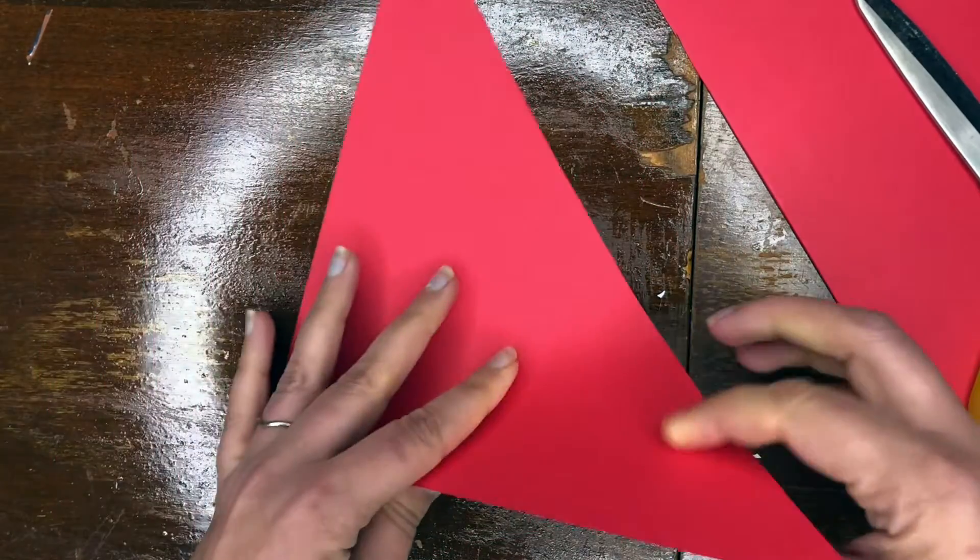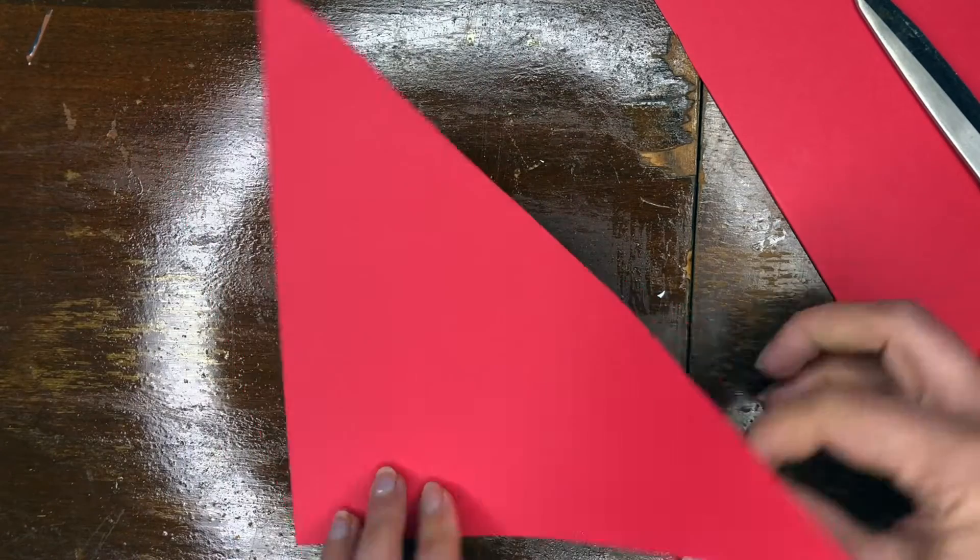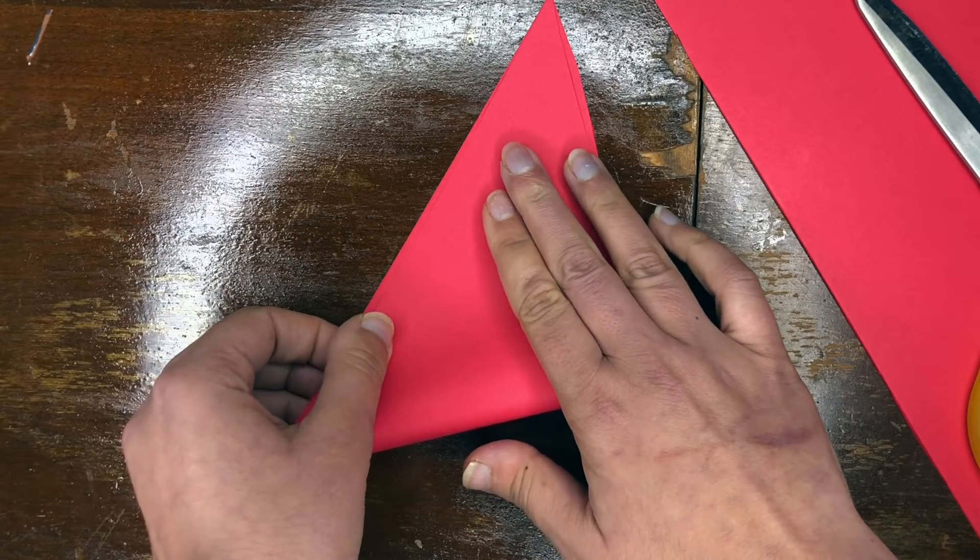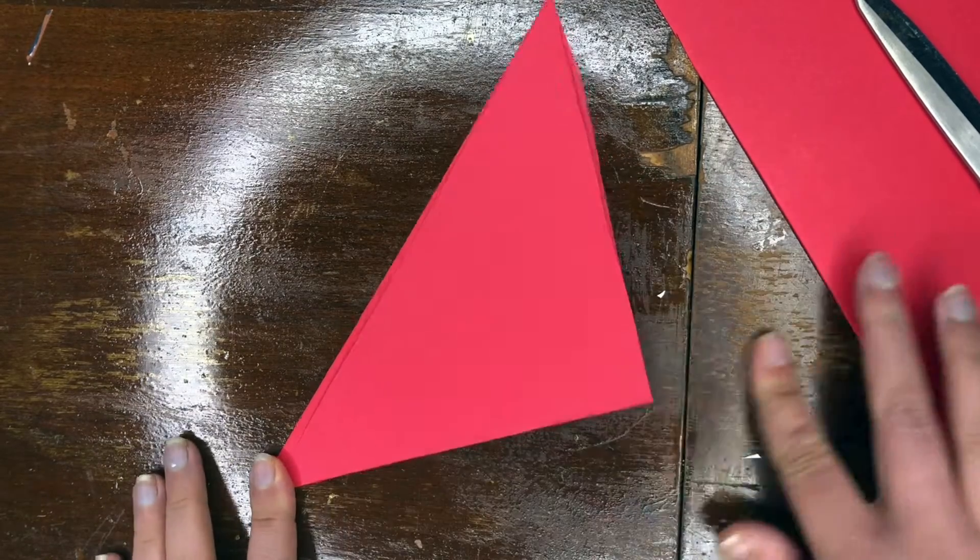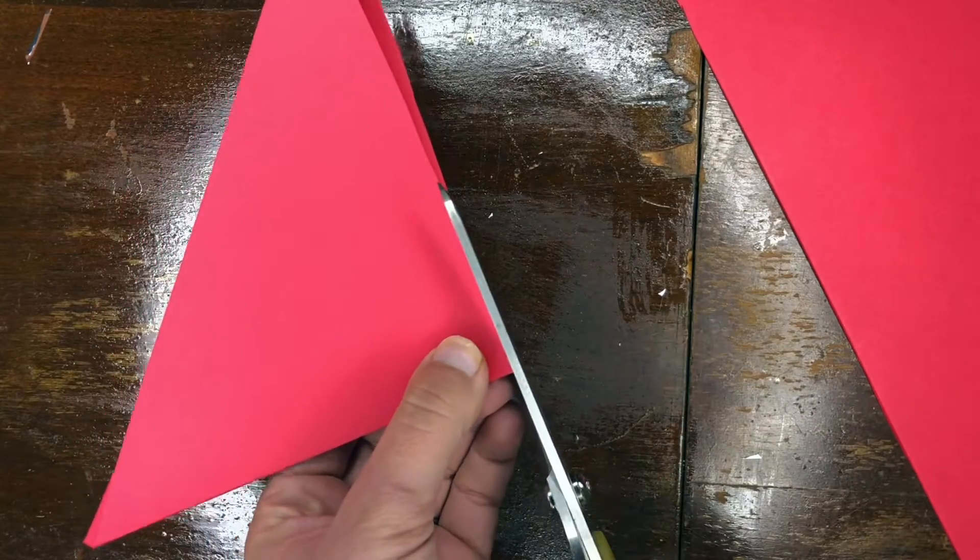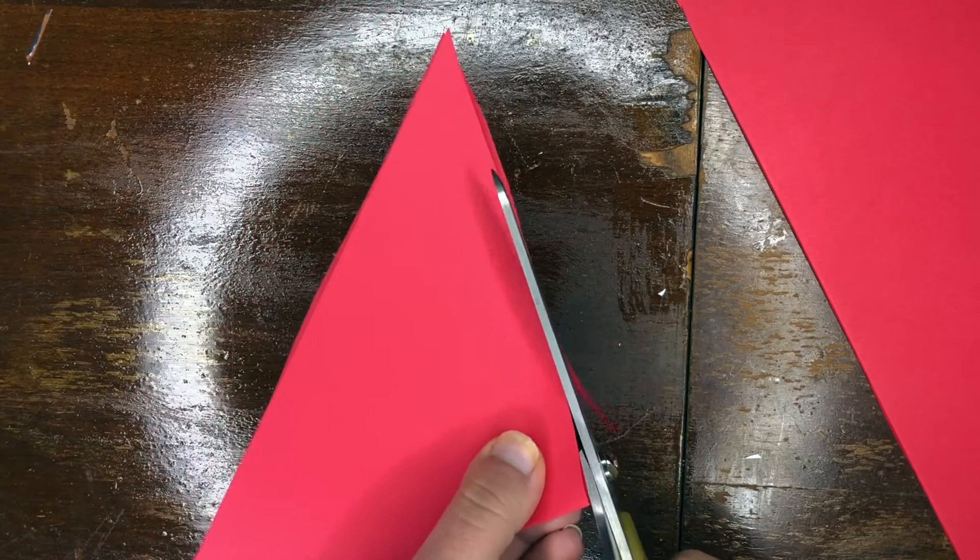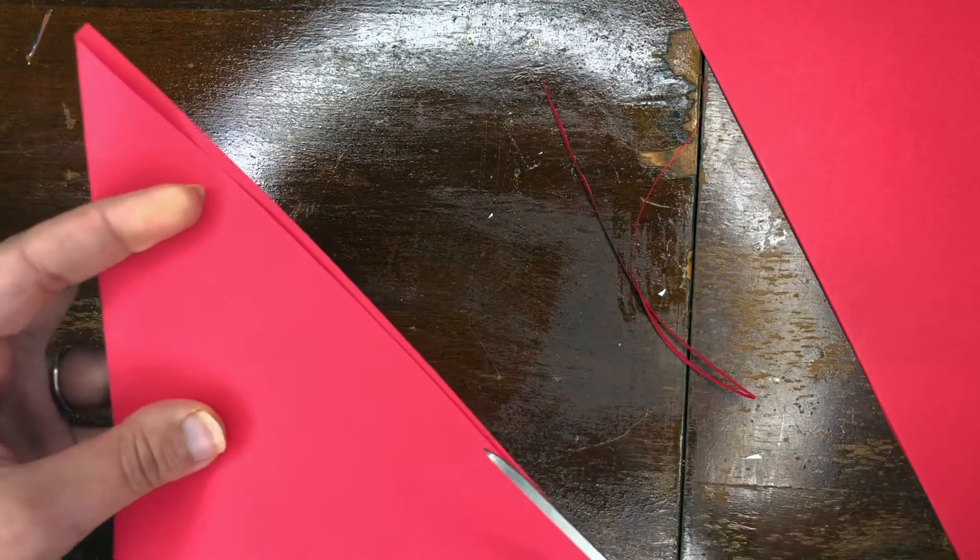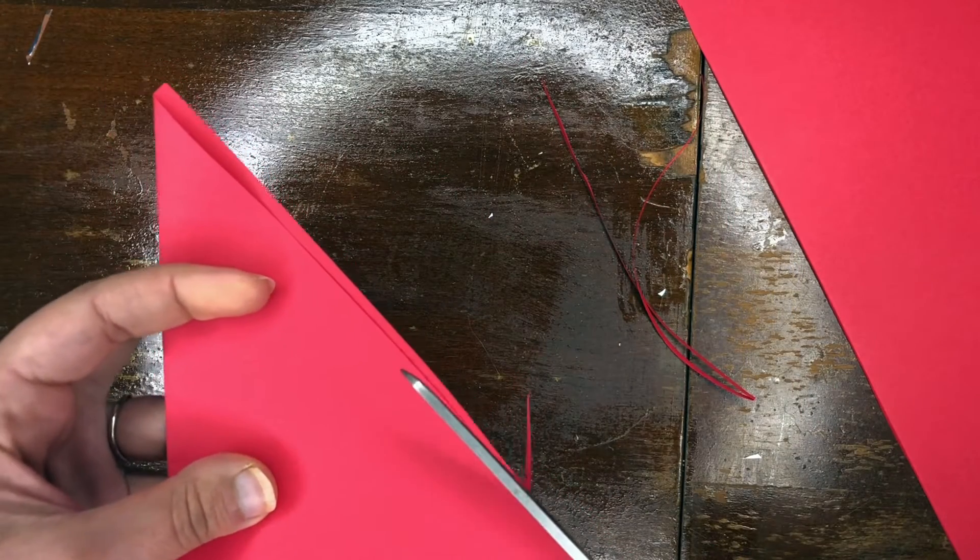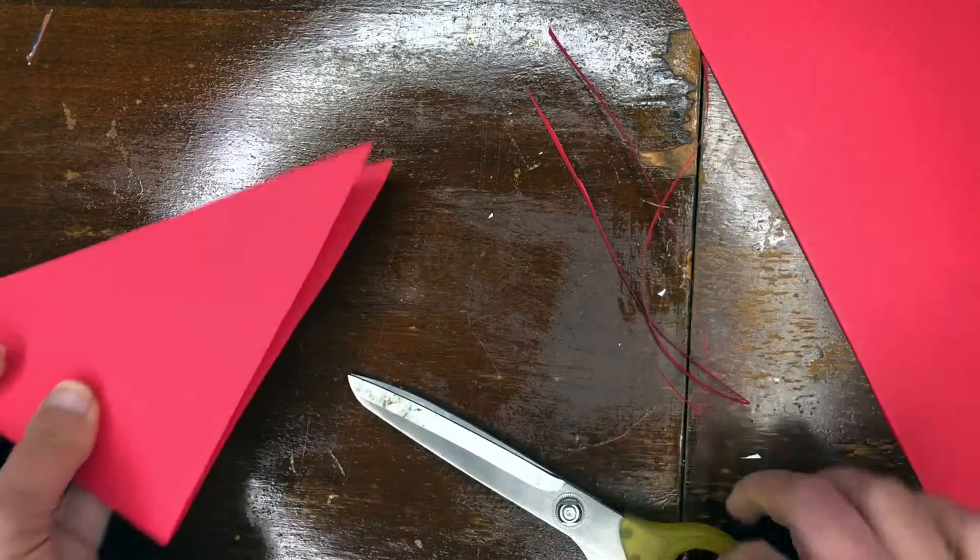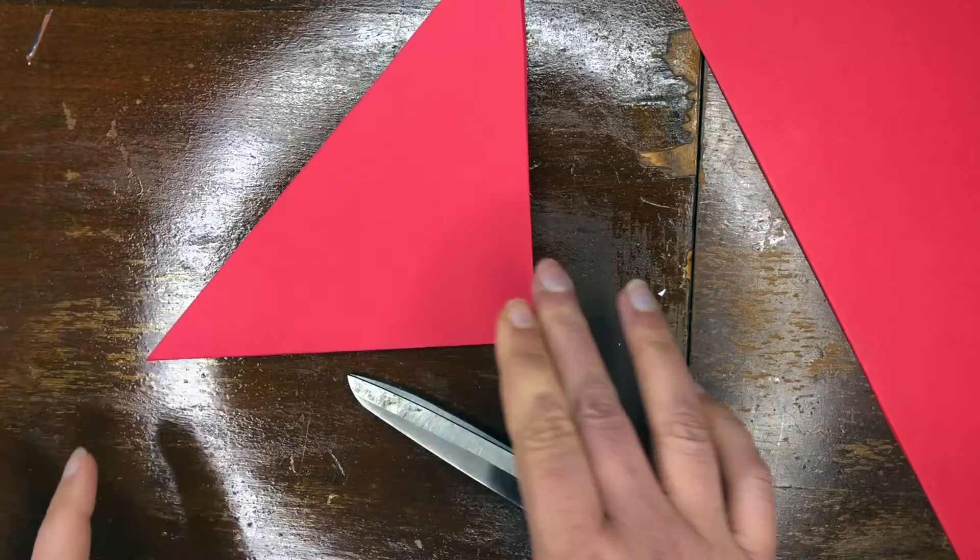Okay now we're going to take this triangle and we're going to fold it up again. These are the wings of our bird. Now my fold is a little off so I am going to just clean it up a little bit. It doesn't have to be perfect. Here we go. So there's the start of our bird.